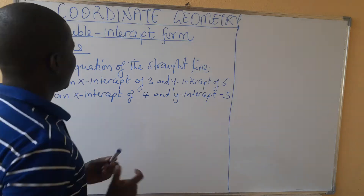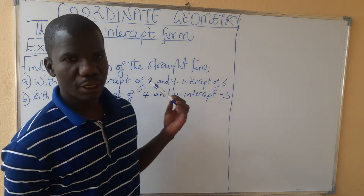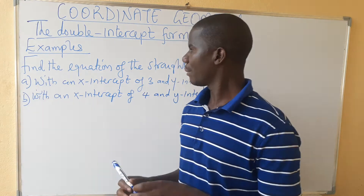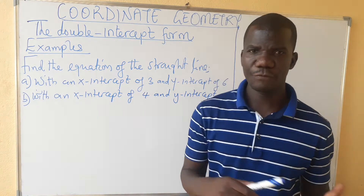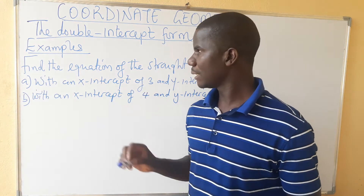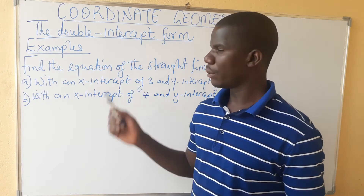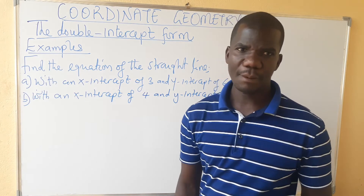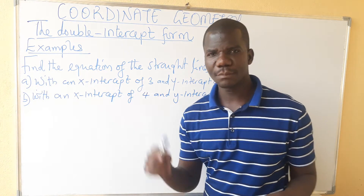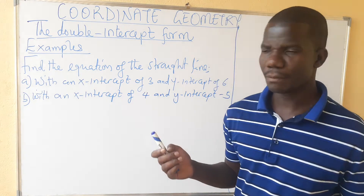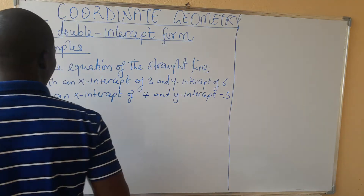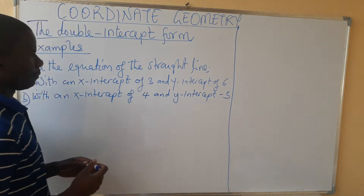Hello, welcome to today's lesson. We are still looking at coordinate geometry, and now we are going to look at how we form the equation of a straight line when we are given a double intercept — the x-intercept as well as the y-intercept. Let's look at the first example.